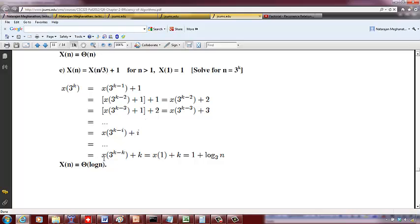Instead of i, you replace k, so X(1) = 1, so it's going to be 1 + k. And you know k is going to be, from this, if n = 3^k, k is going to be log n to the base 3.